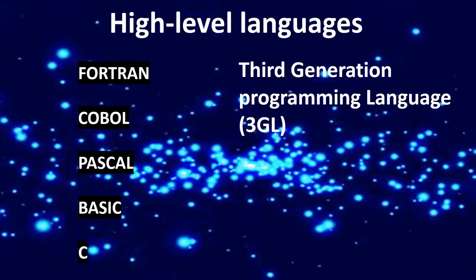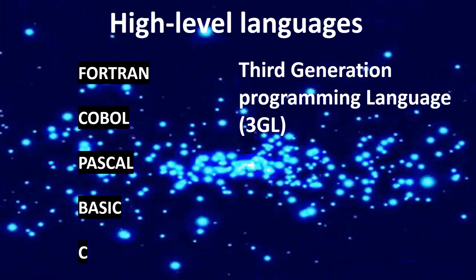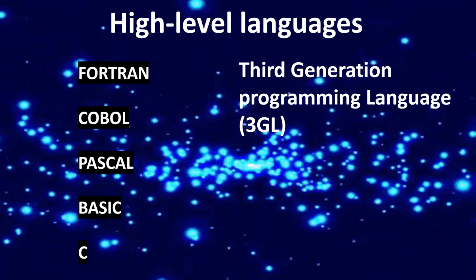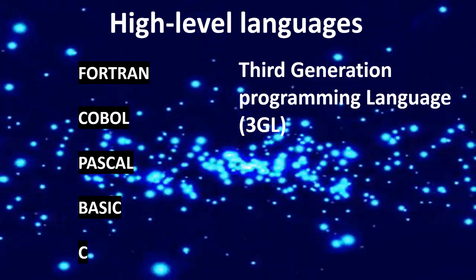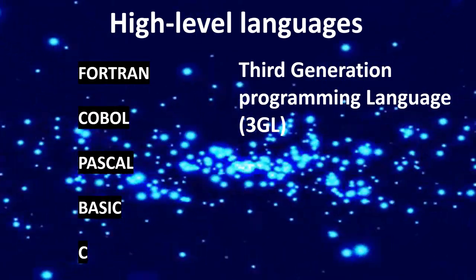High level languages like FORTRAN, COBOL, PASCAL, BASIC and C were used for programming. They are called third generation programming language or 3GL.